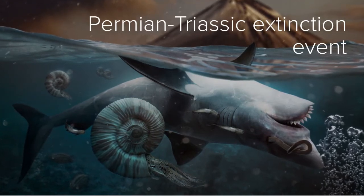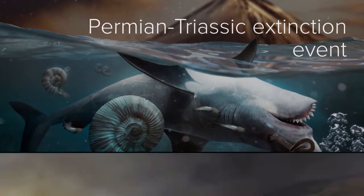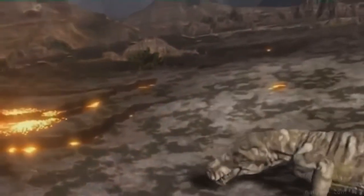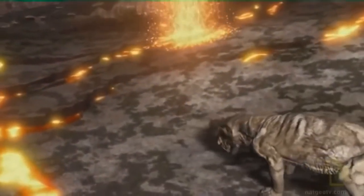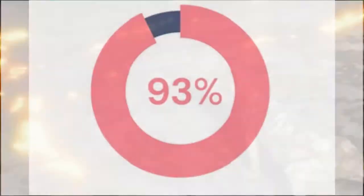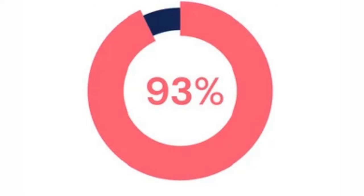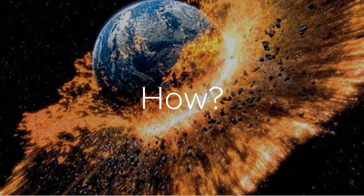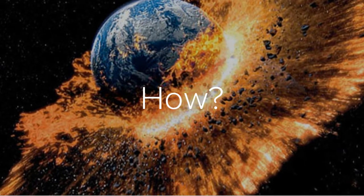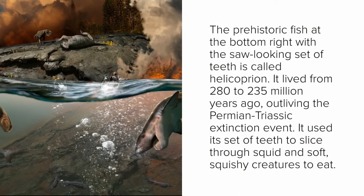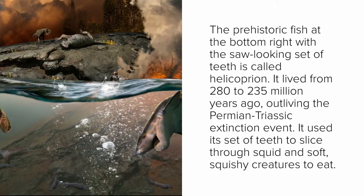Have you ever heard of the Permian to Triassic Extinction Event? The Permian to Triassic Extinction Event, nicknamed the Great Dying, was the greatest known mass extinction in the history of our planet. It was a mass extinction that occurred approximately 250 million years ago and killed 93% of all life on Earth at the time. But how did this cataclysmic tragedy happen on our very own planet? Let's go back into the Earth's prehistoric past to see how this unfolded.